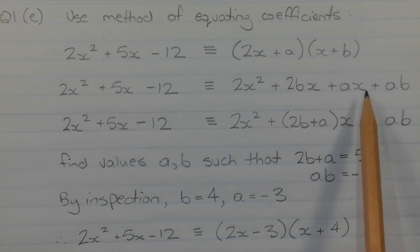The next step is to factorize the middle two terms. So I'm going to take x out as a common factor. We have 2x squared plus 5x minus 12 is identical to 2x squared plus 2b plus a in brackets times x plus ab.